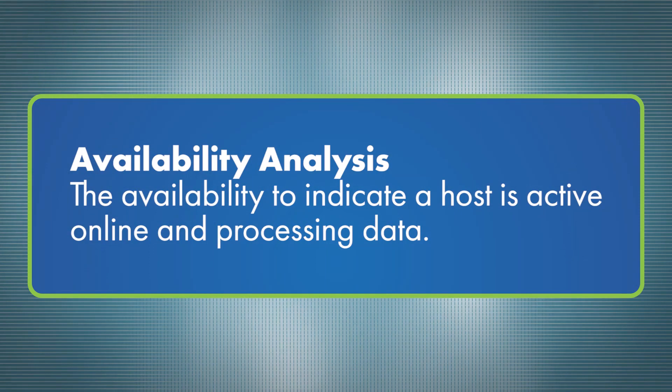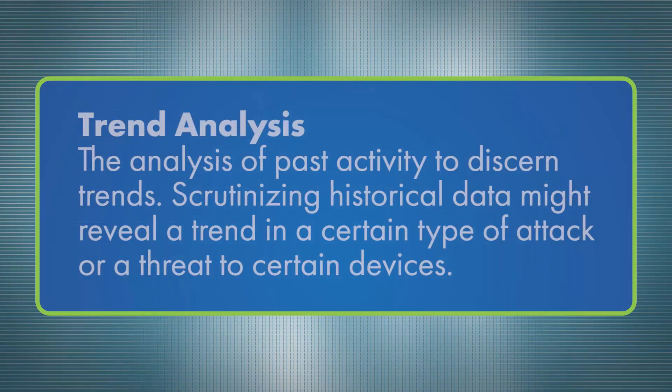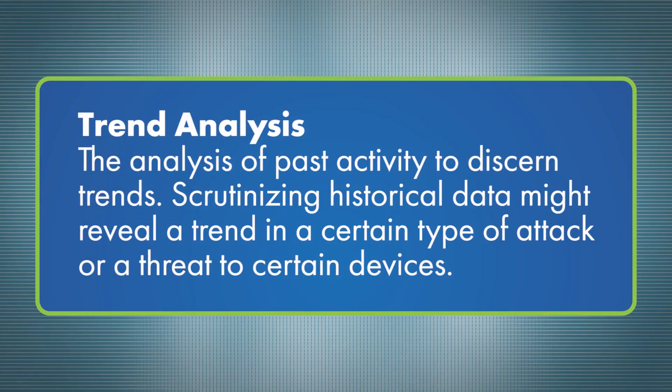In this context, availability analysis is the availability to indicate a host is active, online, and processing data. Trend analysis is the analysis of past activity to discern trends. Scrutinizing historical data might reveal a trend in a certain type of attack or threat to a certain device. You also need to be aware of global information security trends and the latest threats.